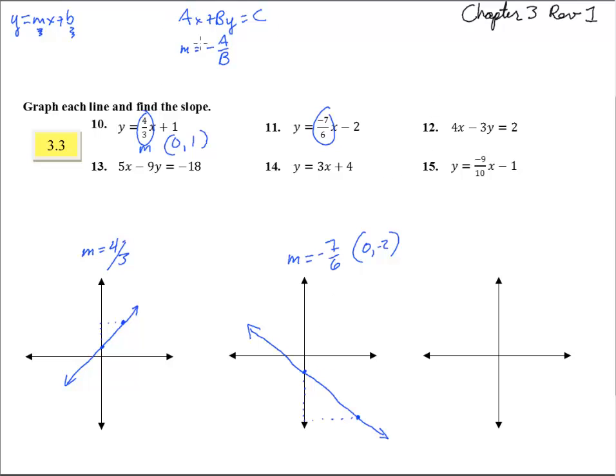Number twelve, this is in standard form. So the slope is going to be the opposite of four over negative three. So write it like this, the opposite of four over negative three. That's two minus signs, that means we have a positive four thirds slope. And I don't know, we could do the x intercept or the y intercept. Let's do the x intercept, put zero in for y, and we get 4x equals two, that means x equals two fourths, which is one half. So one half zero is what we'll get here. Looks like it'll be about right there.